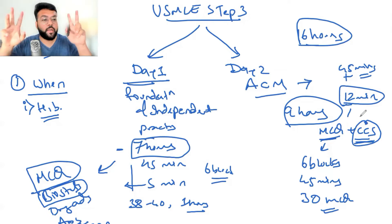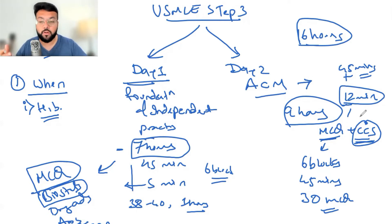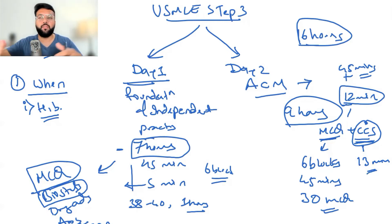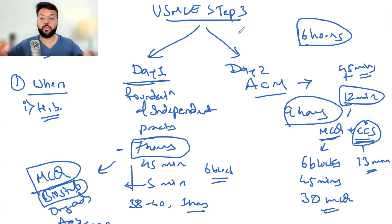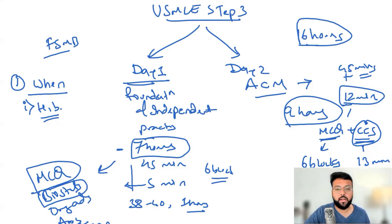CCS cases are actually a scoring opportunity in Step 3 — they're fairly straightforward. You need to put the main diagnosis and main drug, and manage the patient accordingly. They expect basic orders like IV fluids or securing the airway. In total, there are 13 CCS cases: around six or seven are 10-minute cases and six are 20-minute cases. Most people finish Day 2 in about seven hours despite it being a nine-hour exam.